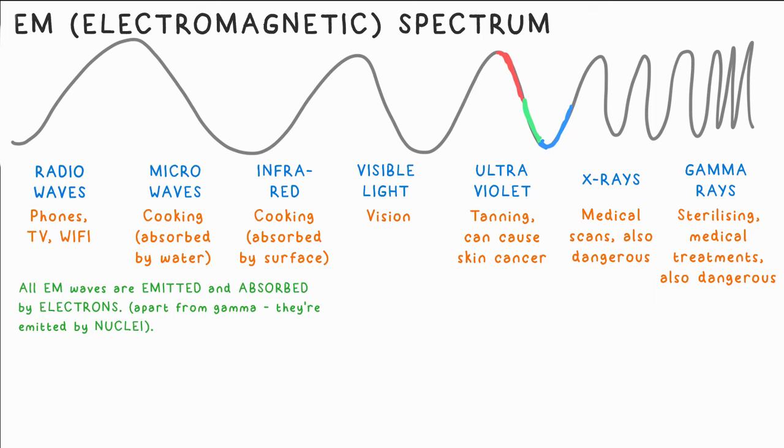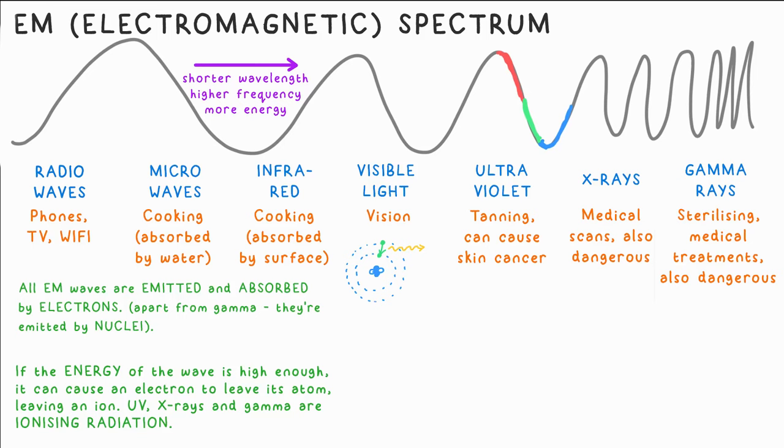EM waves are produced when electrons lose energy. They lose the energy as an EM wave. The higher the frequency, the more energy the wave carries, and the shorter the wavelength. The only exception are gamma rays, which are actually emitted by nuclei instead. That means lots more energy is involved. That's why they're dangerous.